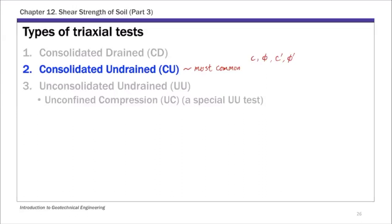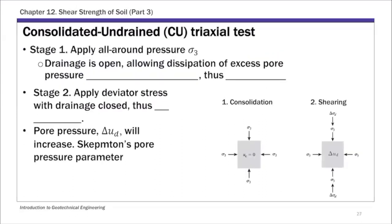For the CU triaxial test, you have two stages, as in a general triaxial test. In Stage 1, when you apply the all-around pressure sigma 3, you keep the drainage open, allowing the dissipation of excess pore water pressure. So the excess pore pressure during Stage 1 is zero, and you allow the specimen to consolidate. That is what the first letter 'C' stands for — consolidated during the all-around pressure stage, sigma 3.